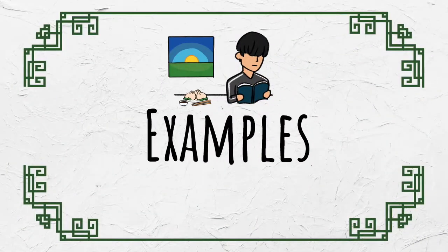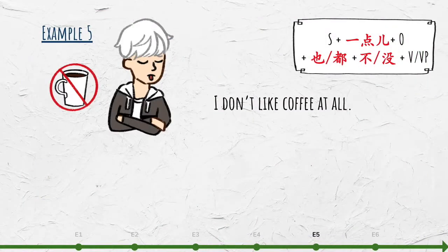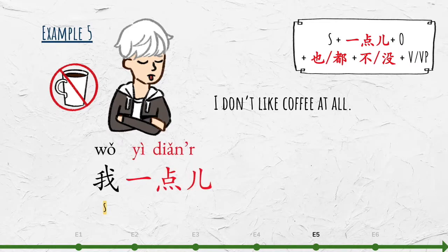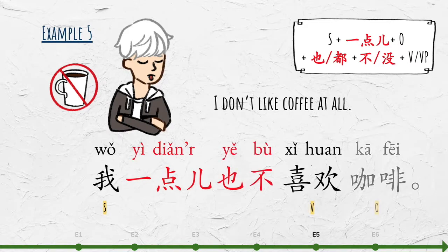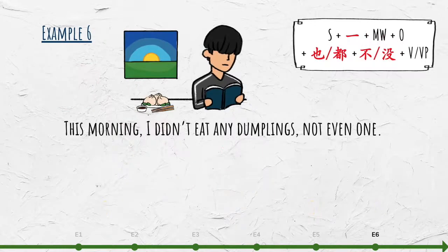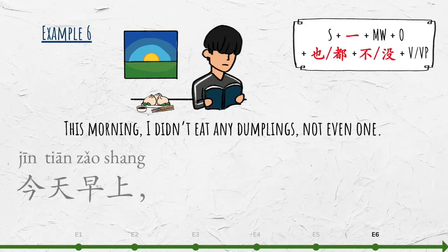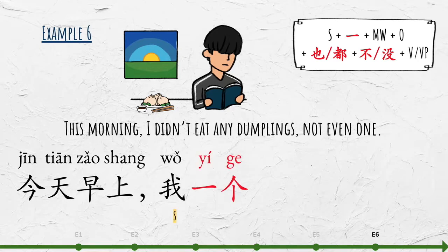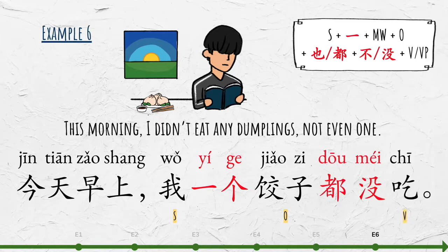Here are some more examples. 'I don't like coffee at all.' 我一点儿也不喜欢咖啡. 'This morning, I didn't eat any dumplings, not even one.' 今天早上我一个饺子都没吃.